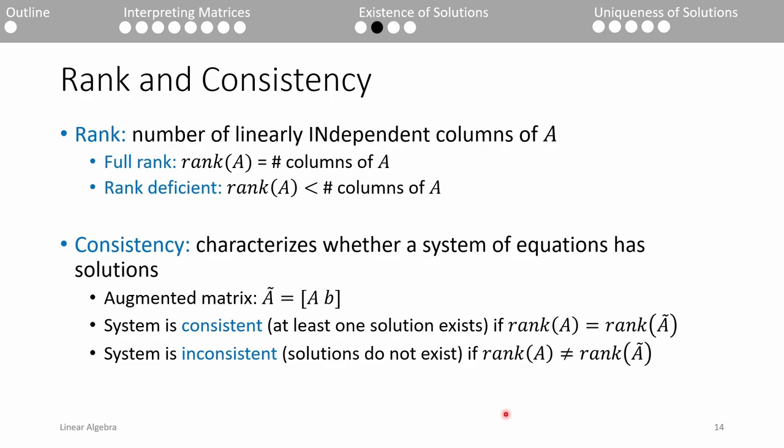Here are some more definitions. The rank is defined as the number of linearly independent columns of our A matrix. An A matrix is said to be full rank if the rank of A equals the number of columns of A. For example, if A is 2x2 and its rank is 2, then A is full rank. But if A only has one linearly independent column, then the rank of A equals 1, and we say it's rank deficient.